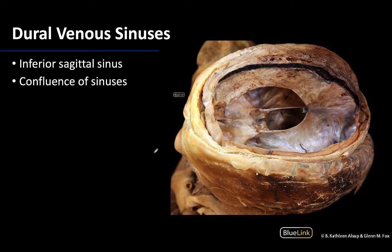Same image, but let's add in a couple of other sinuses. The inferior sagittal sinus is going to traverse the inferior concave free border of the falx cerebri, running in this general region. It's not as clearly visible as the superior sagittal sinus — you can see a little bit of blue right along this region, which is about where the inferior sagittal sinus is running.